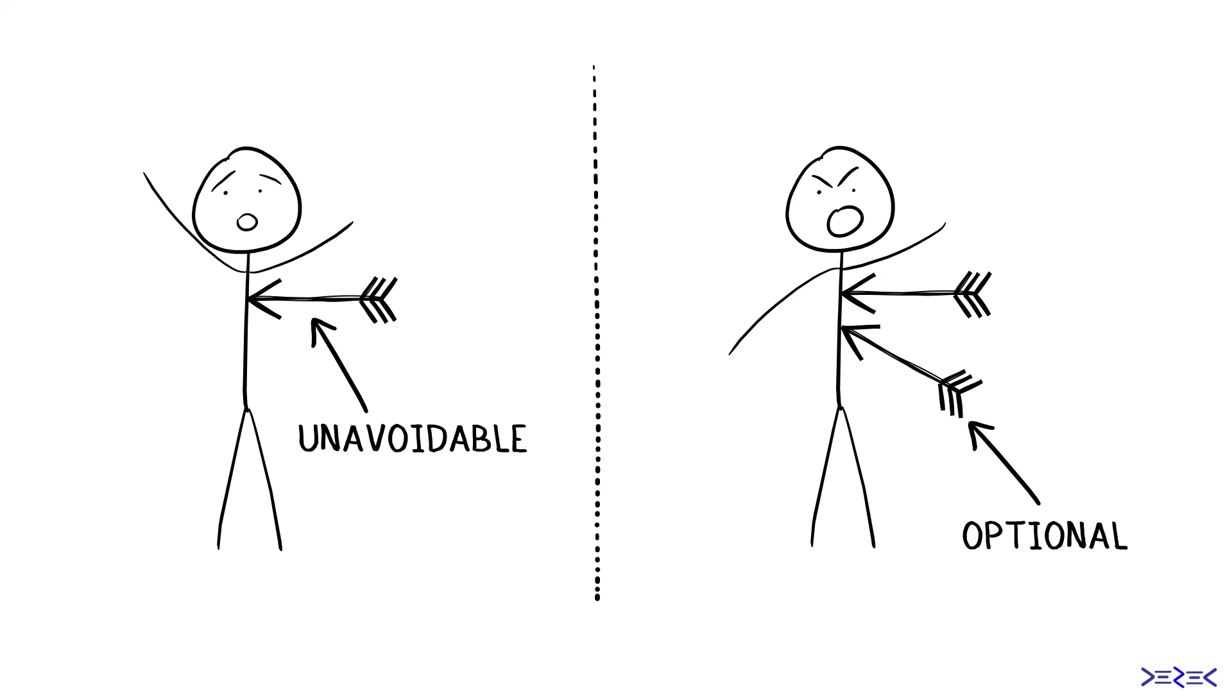So this is another way of saying that pain is inevitable. Pain is the first arrow. Suffering is optional. That's your choice. It's your relationship to the first arrow. So resilience is about eliminating the second arrow.